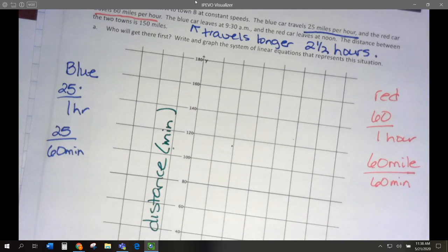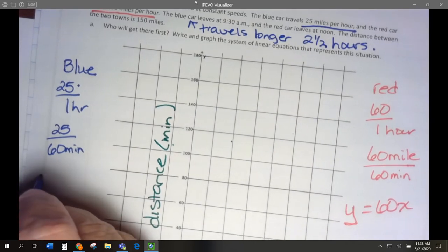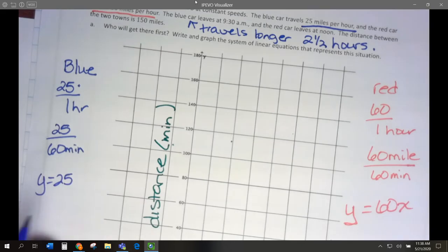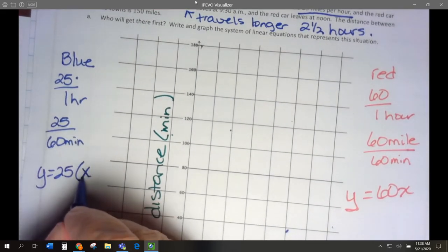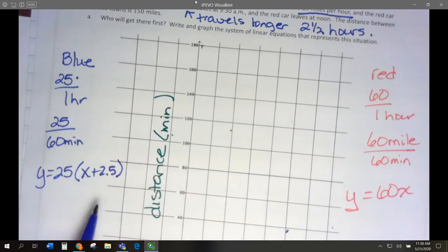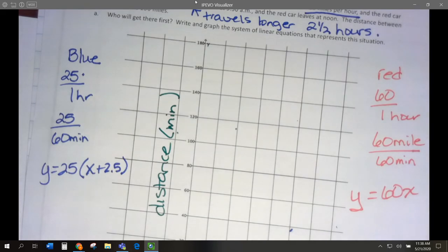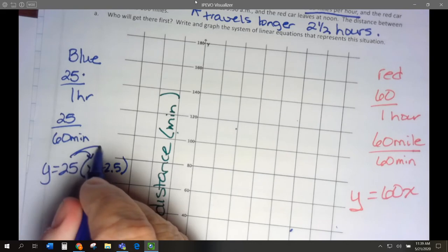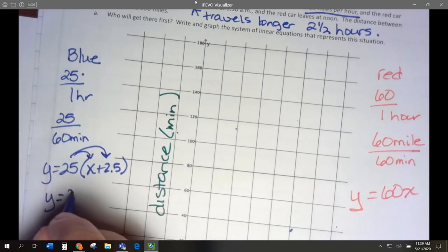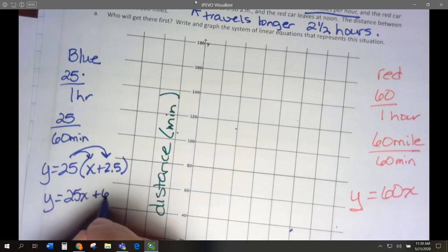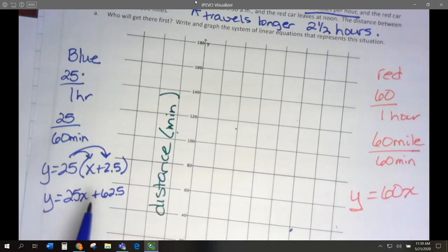So let's do the red car first. The red car is going to be y. Sorry about this. y equals 60x, right? Now the blue car is going to be y equals 25, but not just x. It's going to be x plus the 2.5, right? Because it went two and a half hours longer. So we are going to do the distributive property and y is going to equal 25x plus 62.5. If I did 25 times 2.5, I get 62.5.